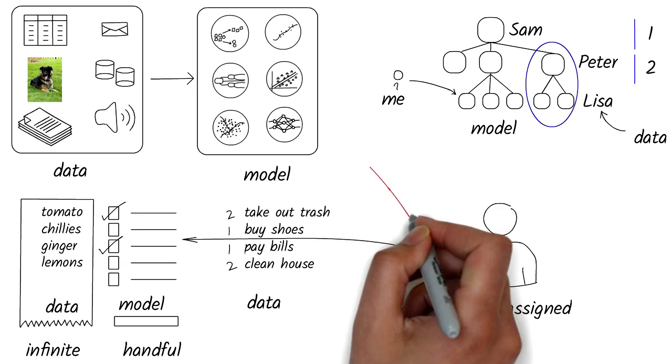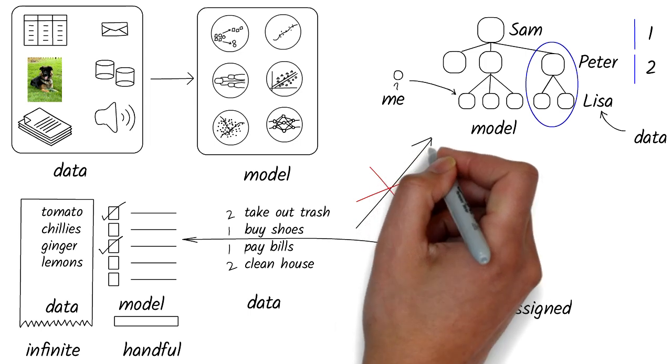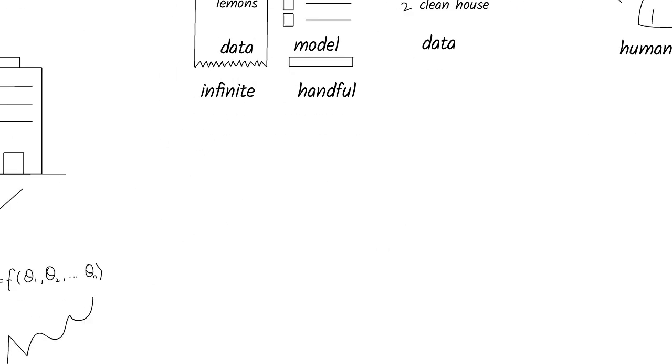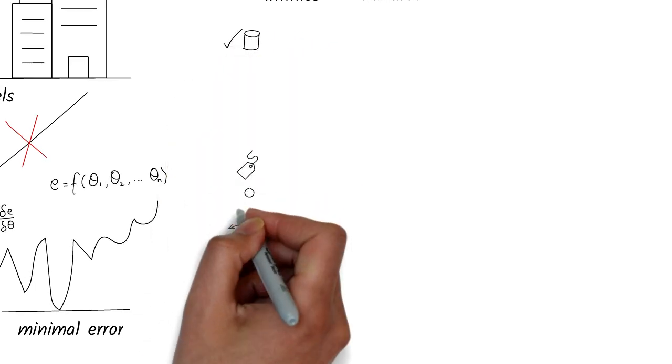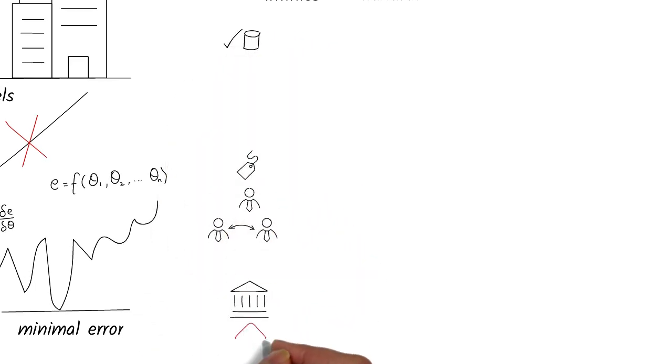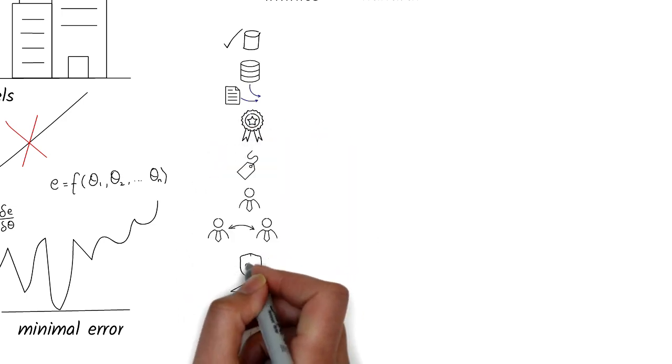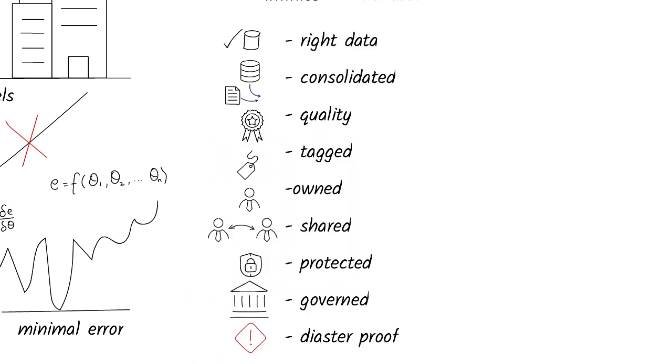In our simple example, you wouldn't use a tree model to manage a list. In the same way, most companies need to focus a lot on understanding the data, such as using the right data, if it's consolidated, if it's good quality, if it's tagged and protected, governed, and a lot more. Data is where the value and competitive differentiation is.